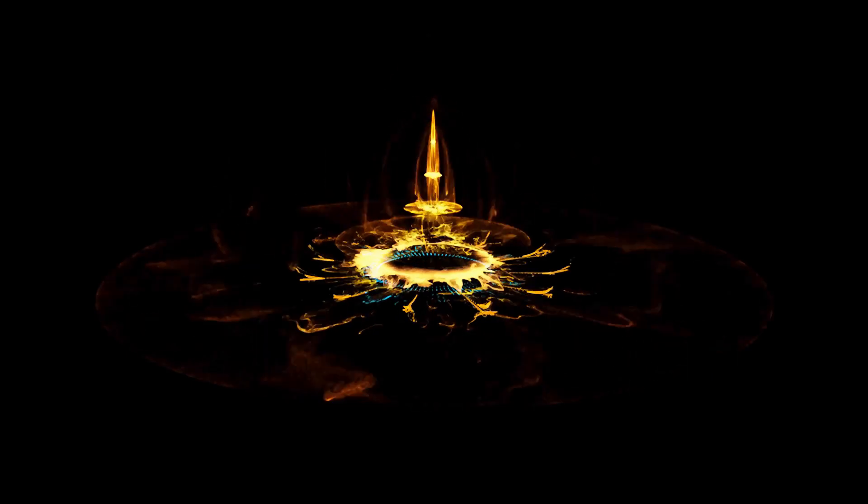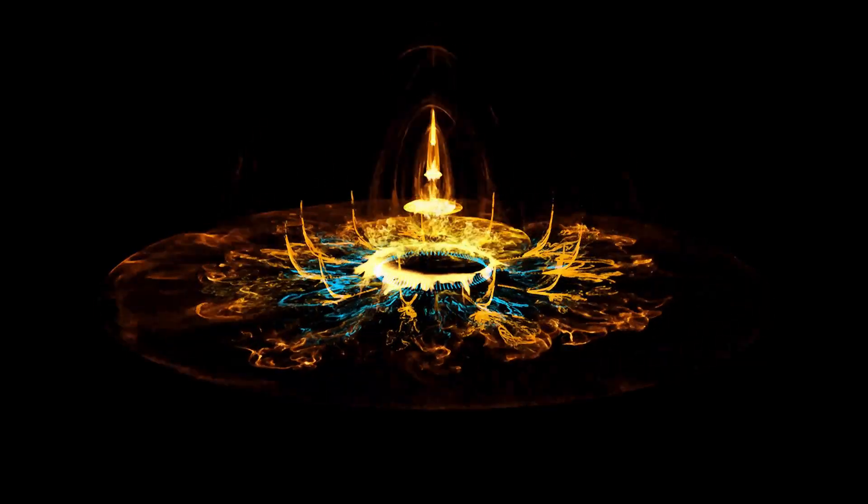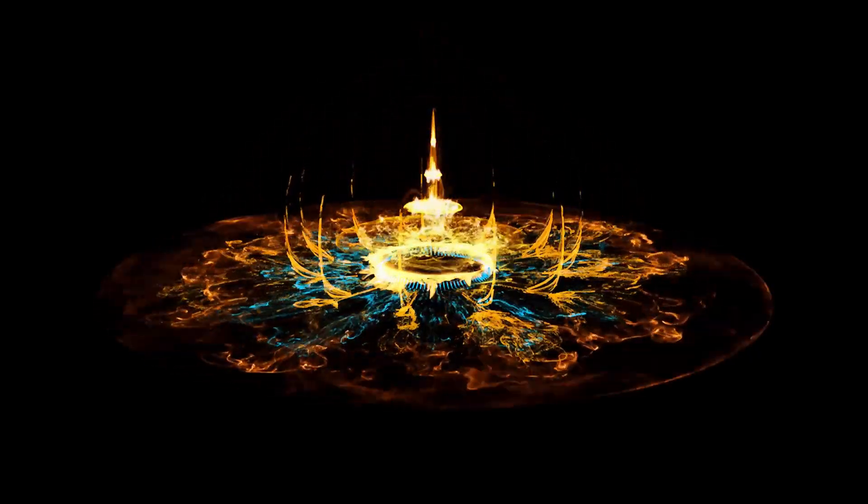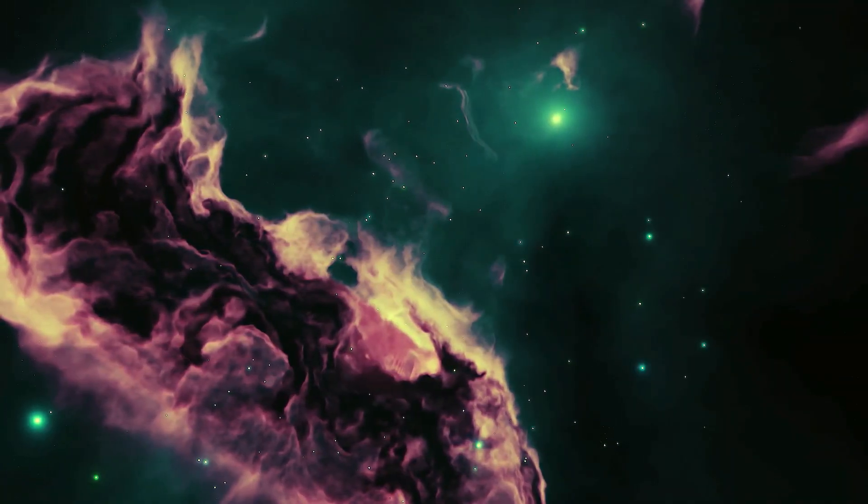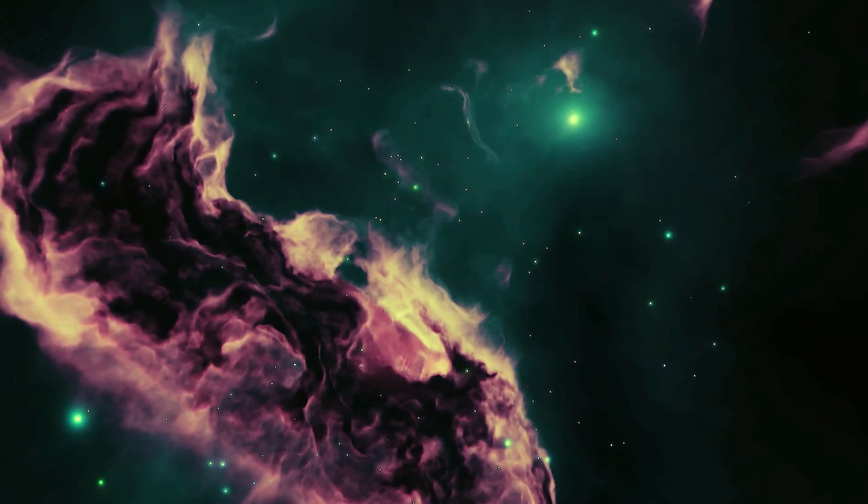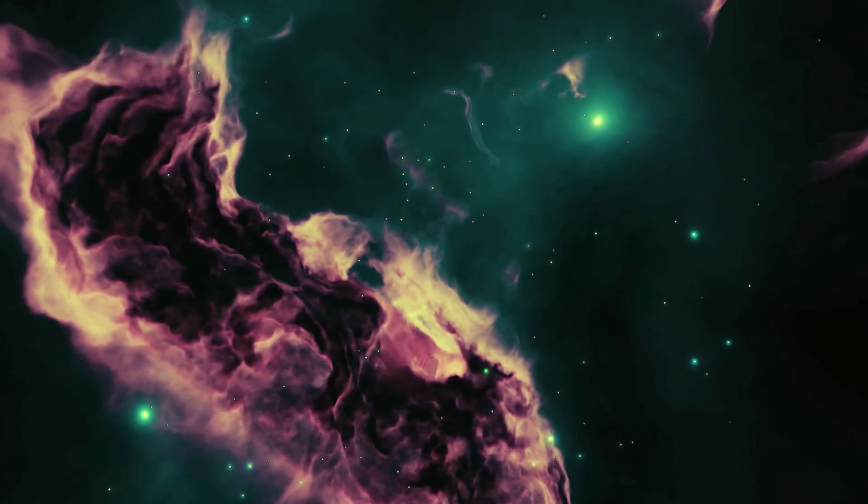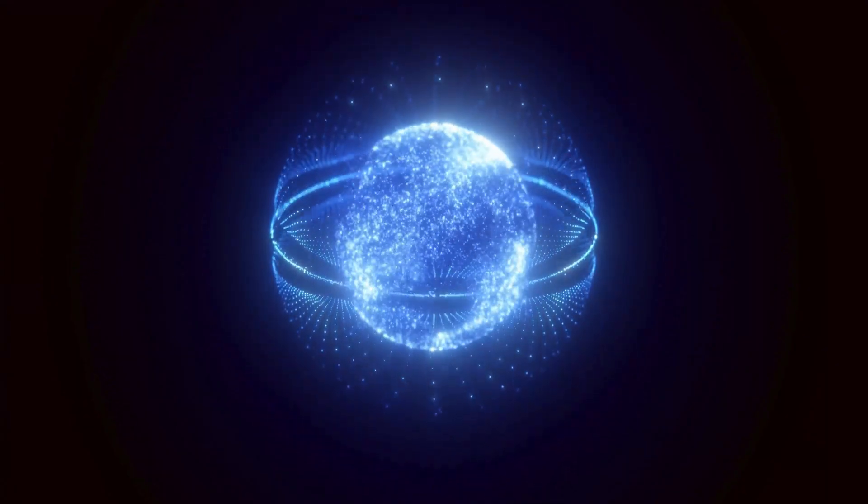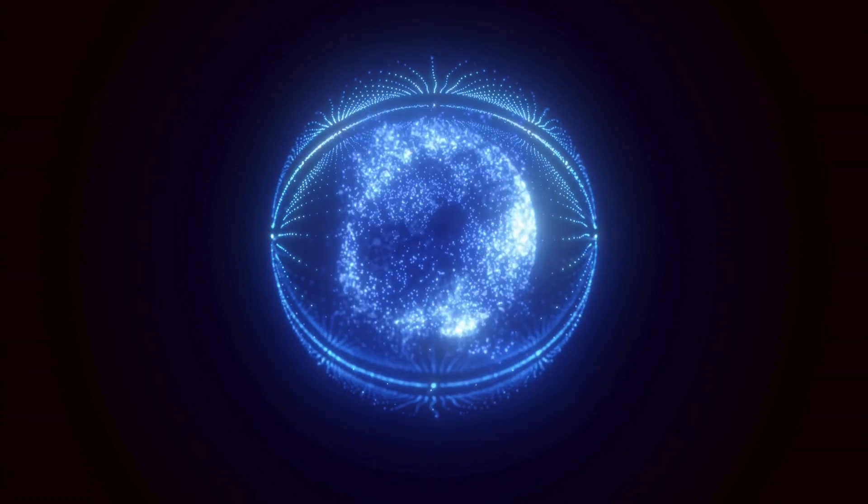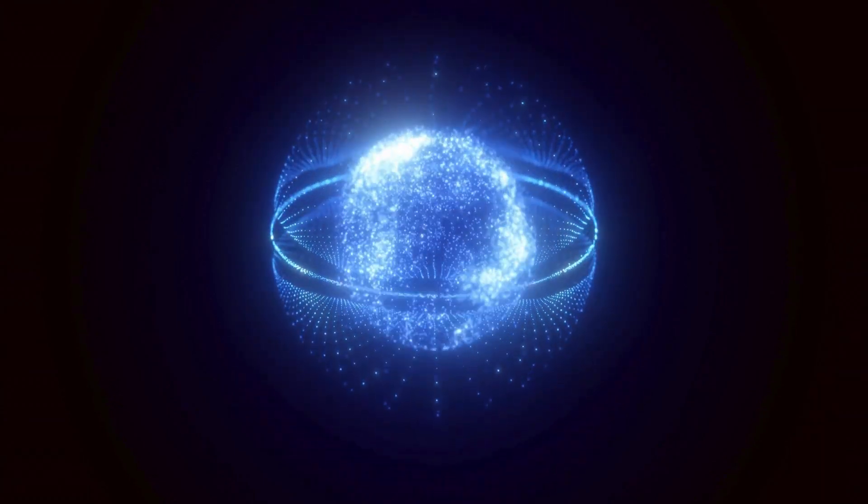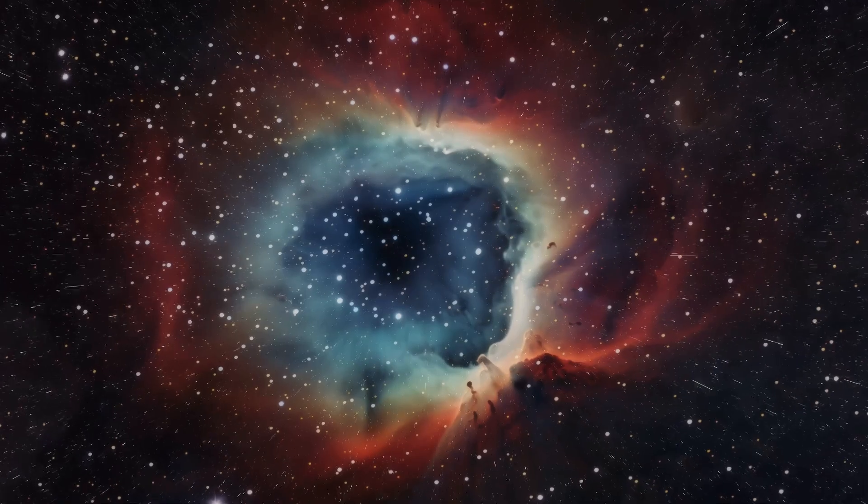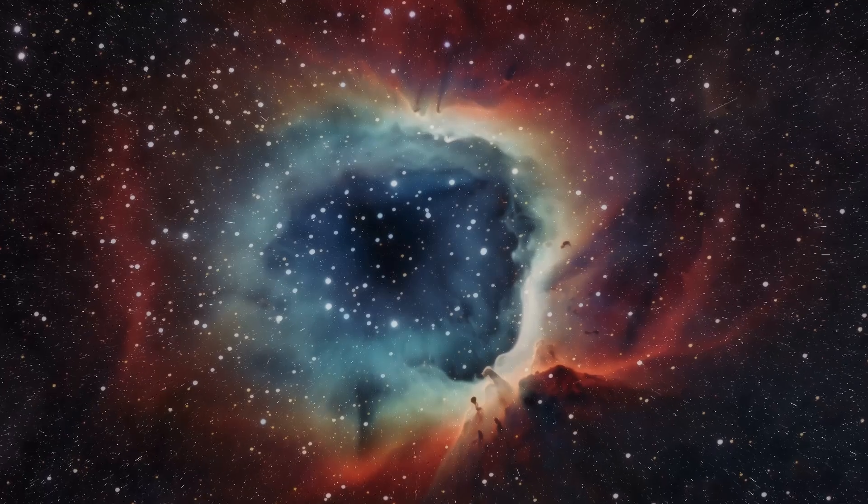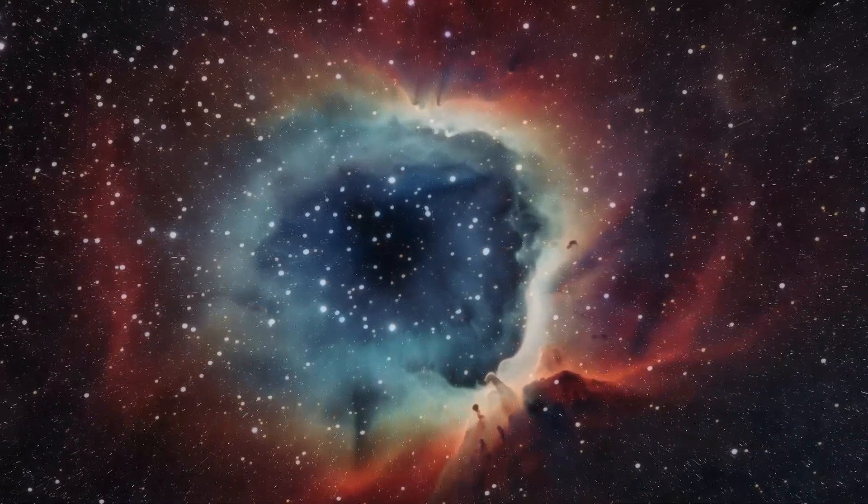Betelgeuse, also known as Alpha Orionis, stands out as one of the most striking and captivating stars in the Orion constellation. Its remarkable variability in apparent size, ranging from 0 to 6, marks it as a variable star. Although Rigel holds the designation of Alpha Orionis, Betelgeuse's capriciousness sometimes causes it to appear brighter than it actually is. Historically, the designations Alpha Orionis and Beta Orionis were assigned to Betelgeuse and Rigel, respectively, in Johann Bayer's Uranometria published in 1603.